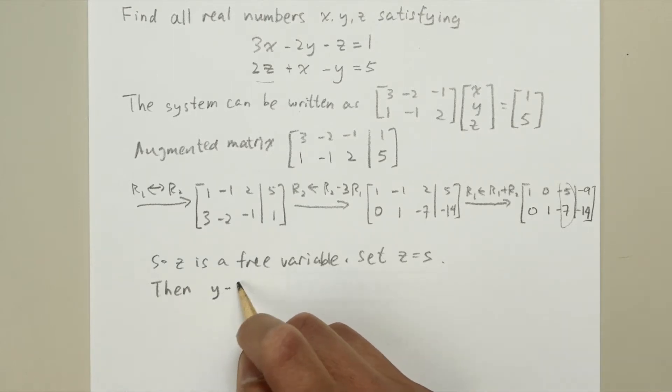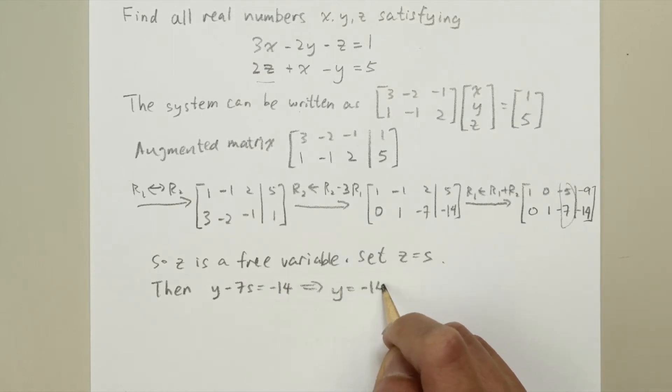Then from the second row, we see that y minus 7s is equal to minus 14. And this gives us y equals minus 14 plus 7s.